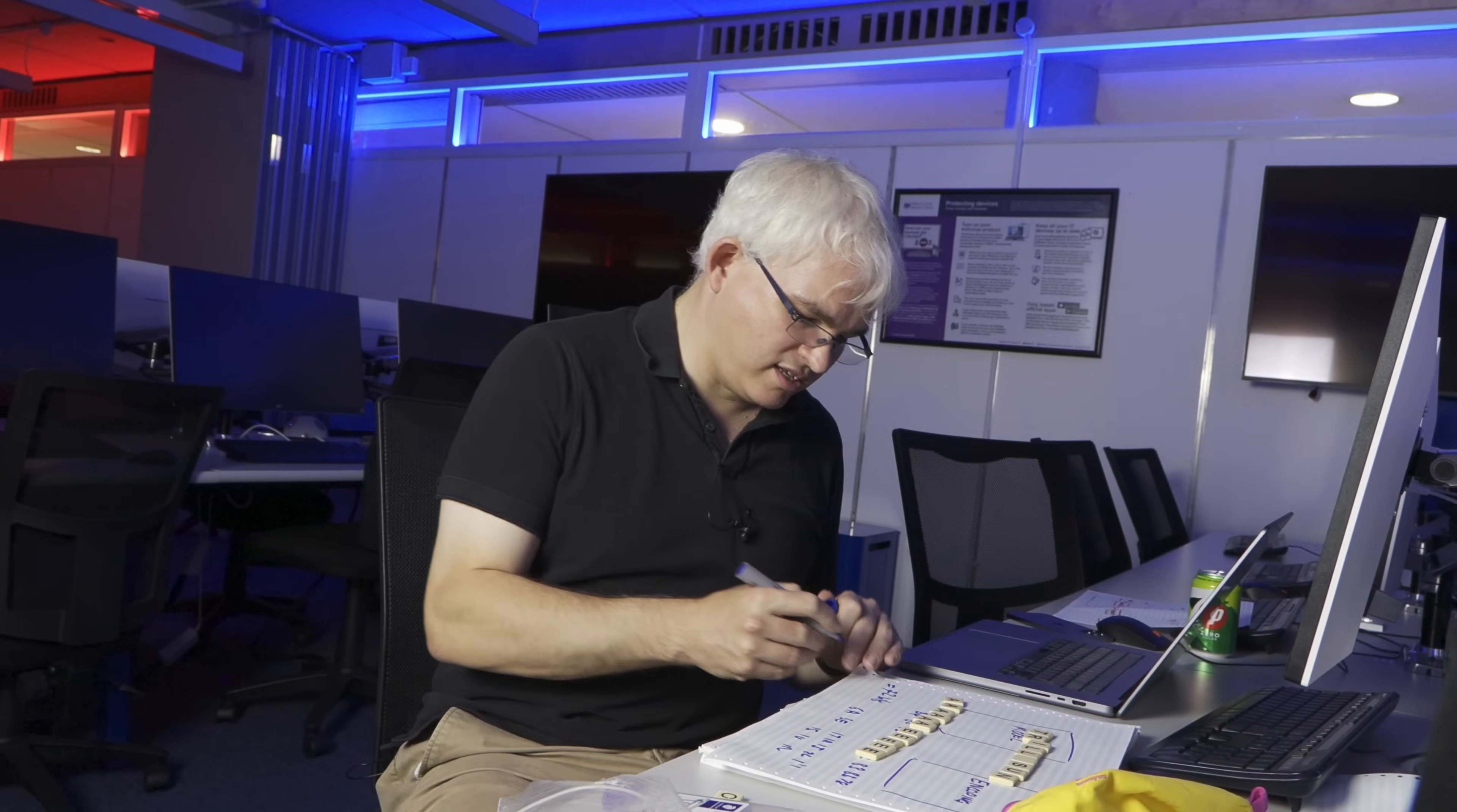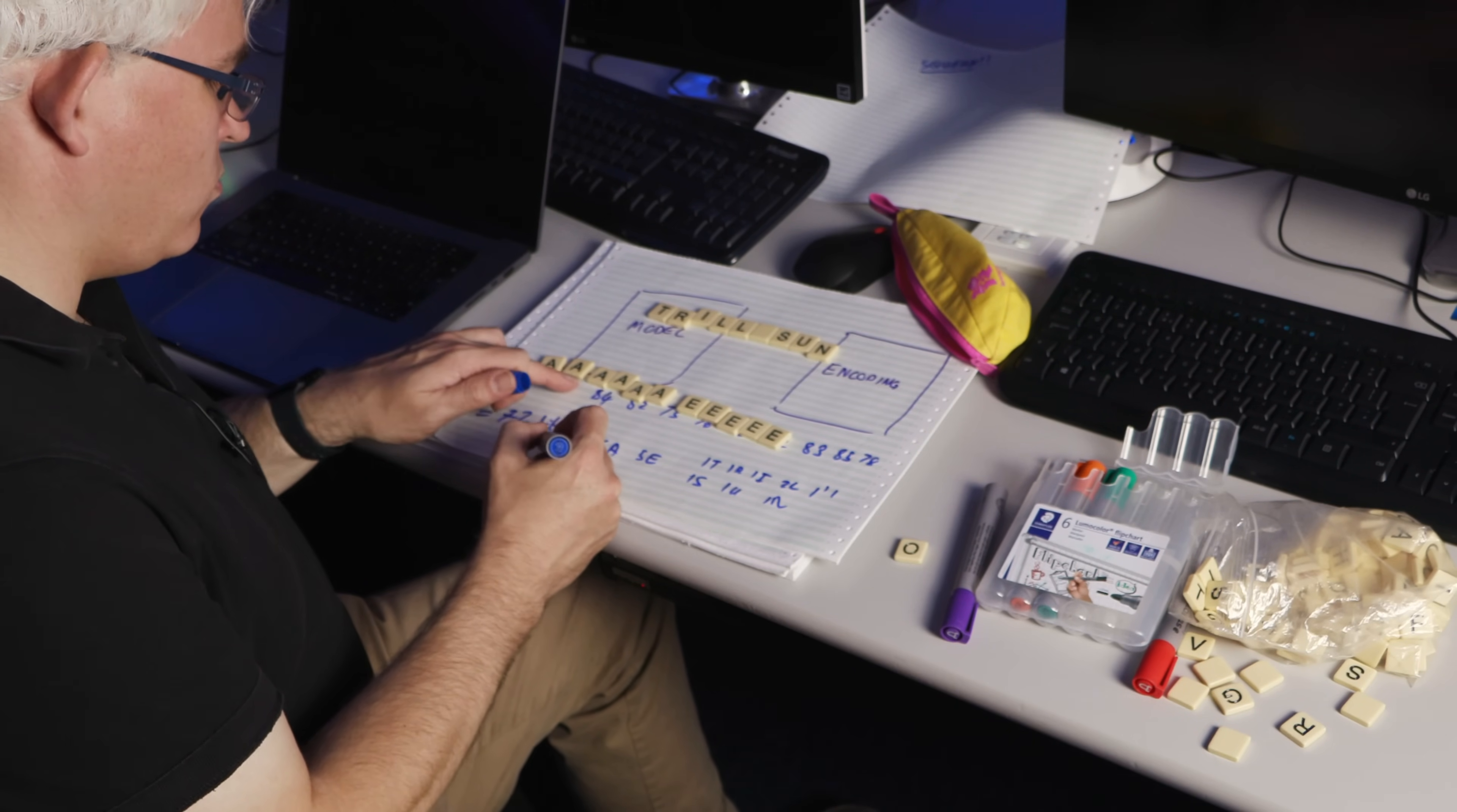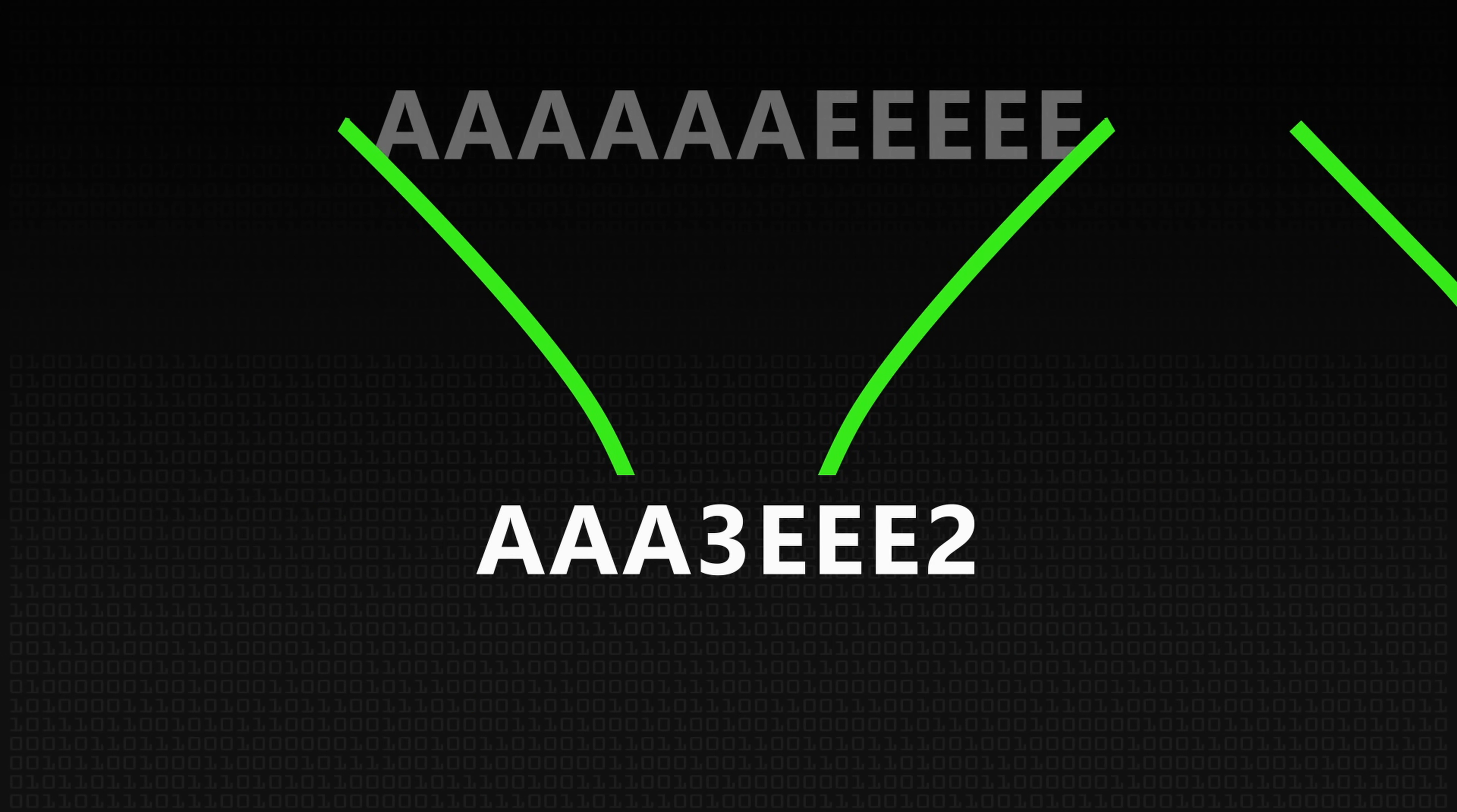well what I'll do is I will say if I've seen three A's, the next symbol that comes along tells me how many more there are. So in this case, I would send it as A, A, A, one, two, three, and then there's three more. And then I'll send it as E, E, E, and two more.